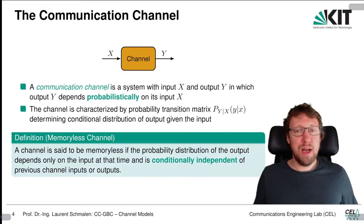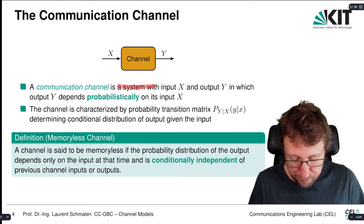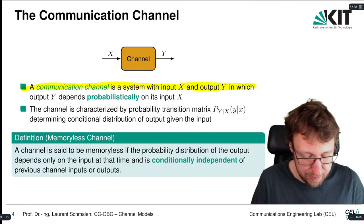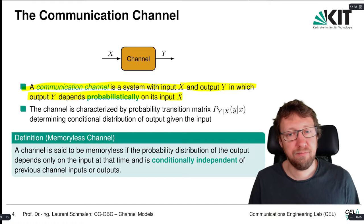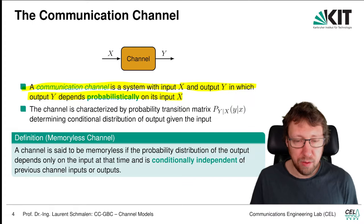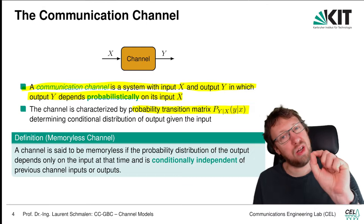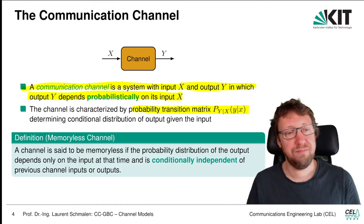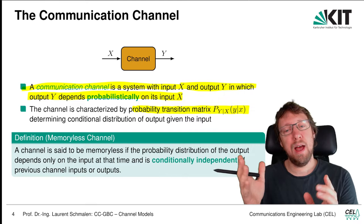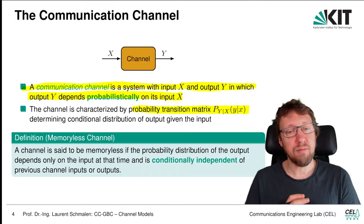What is a communication channel? A communication channel is a system with an input X and an output Y, where the output Y depends probabilistically on the input X. We can characterize it by a probability transition matrix, which gives the probability that a certain output occurs given that a certain input has occurred. That's essentially everything we need to describe a channel.